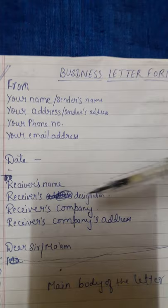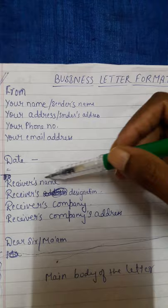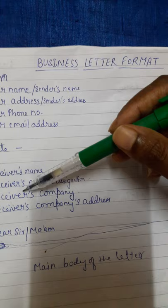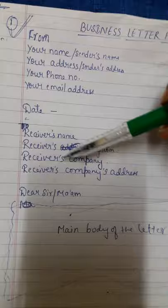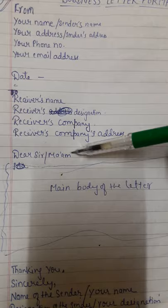In the next line, write the designation of the receiver — the position they hold. If you don't know the receiver's name, just skip it and start from their designation. Then just below that write the name of the company the receiver works in, and just below that write the receiver's company address — where the company is situated.